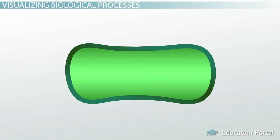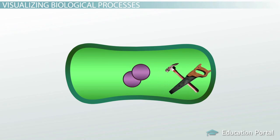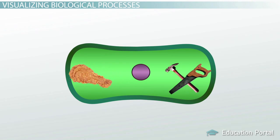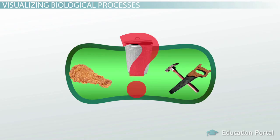Organisms, like bacteria, are constantly taking up chemical compounds, rearranging the atoms, using some for building cell components, digesting some, and respiring others. How can we track or observe a process that is happening at this almost incomprehensibly tiny scale?